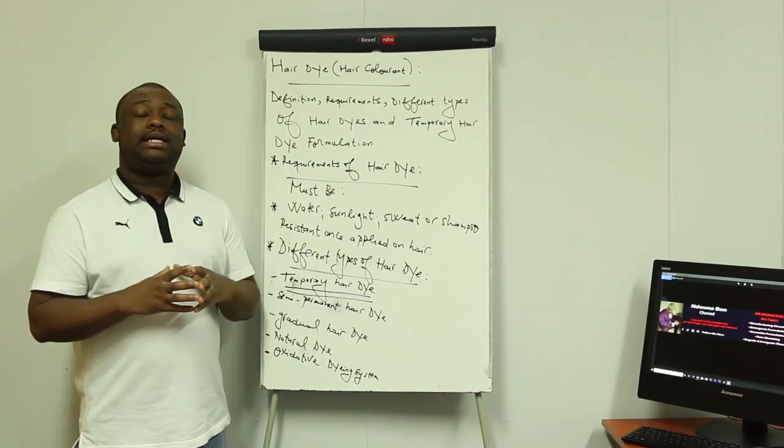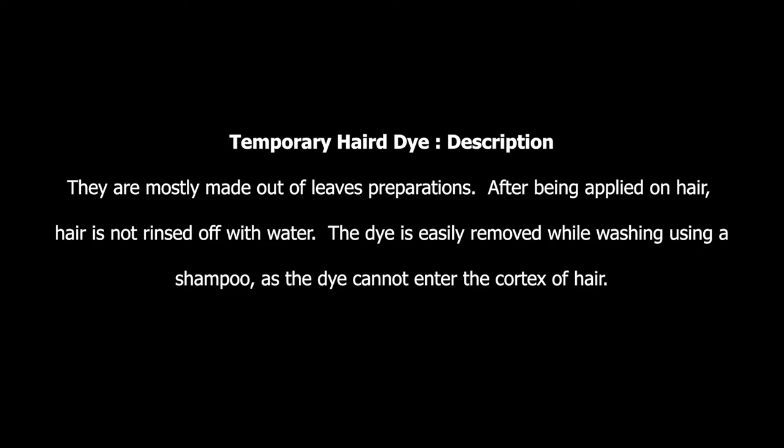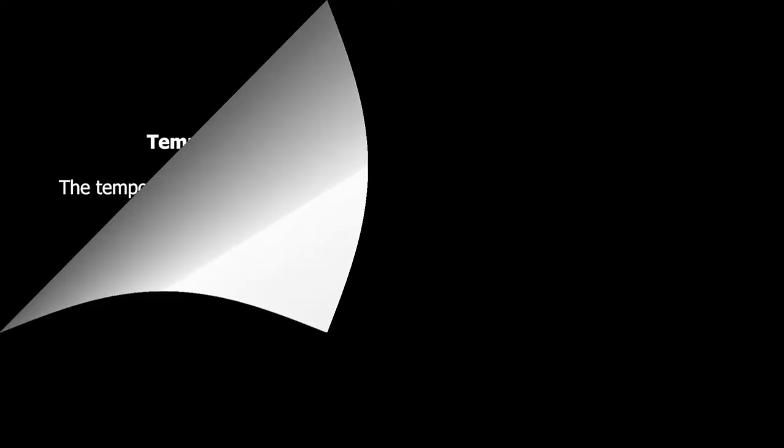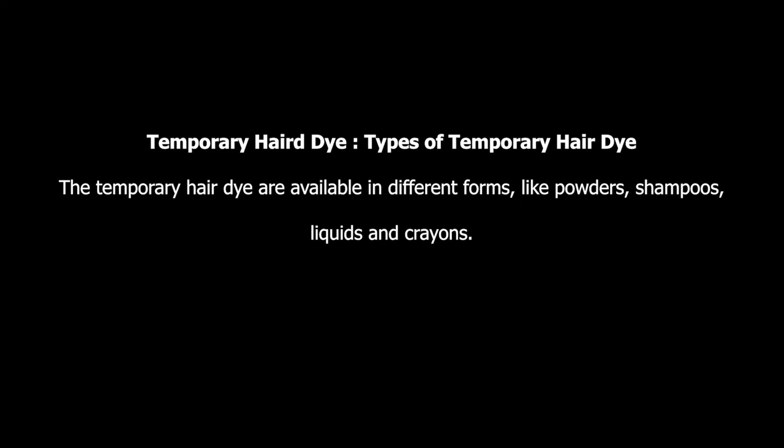We're going to describe and give a formulation of temporary hair dye. The formulations we're going to give out are particularly the powder formulation, shampoo formulation, and crayon formulation. Temporary hair dyes are mostly made out of leaf preparations. After being applied, the hair dye is not rinsed off with water — rather, the dye is easily removed while washing using a shampoo, as the dye cannot penetrate into the cortex of the hair. Temporary hair dyes are available in different forms like powders, shampoos, liquids, and crayons.